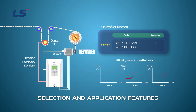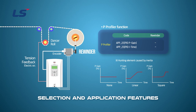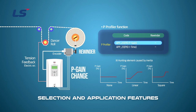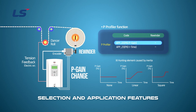The P profiler function compensates for the increased inertia by changing the P gain when the weight and inertia of the bobbin increase as the diameter increases in the rewinder. The amount of compensation varies depending on the material and characteristics, so you can set and use the value through operation.